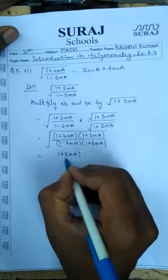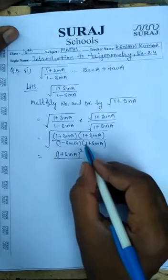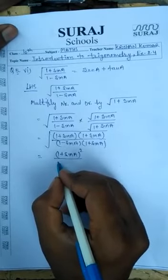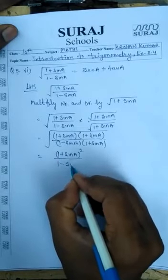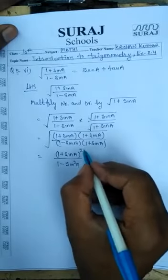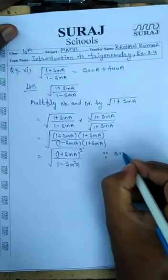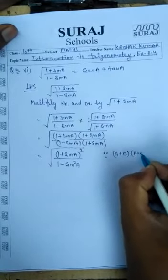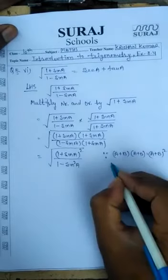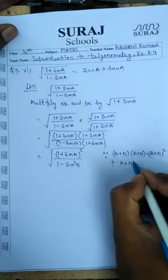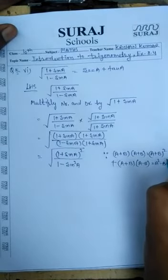The numerator becomes 1 plus sin A whole squared. The denominator has A minus B into A plus B, which gives A squared minus B squared — that is 1 minus sin squared A — all under square root. Because A plus B into A plus B gives A plus B whole square, and A plus B into A minus B gives A squared minus B squared.